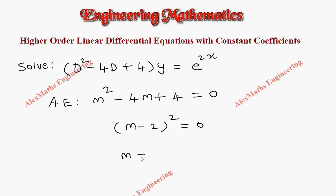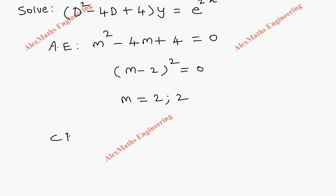So we get two values for m: one is 2 and another is also 2. Both are equal values.